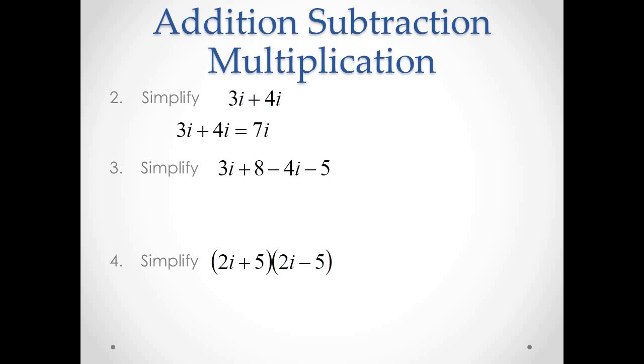For number 3, we need to simplify 3i plus 8 minus 4i minus 5. Combining like terms, we can have 3i minus 4i plus 8 minus 5. This will give us a final answer of negative i plus 3.